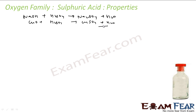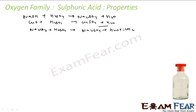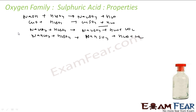Sulfuric acid also reacts with carbonates. For example, Na₂CO₃ reacted with sulfuric acid gives Na₂SO₄, water, and carbon dioxide. With hydrogen carbonates — for example, NaHCO₃ reacted with sulfuric acid — you get NaHSO₄, water, and carbon dioxide.